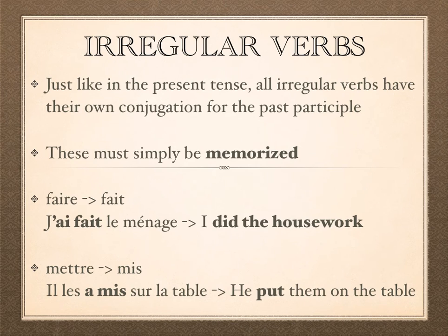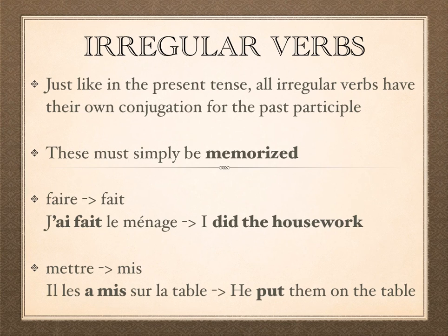And then we have mettre, meaning to put or to place. The past participle is mis. For example, il les a mis sur la table — he put them on the table.